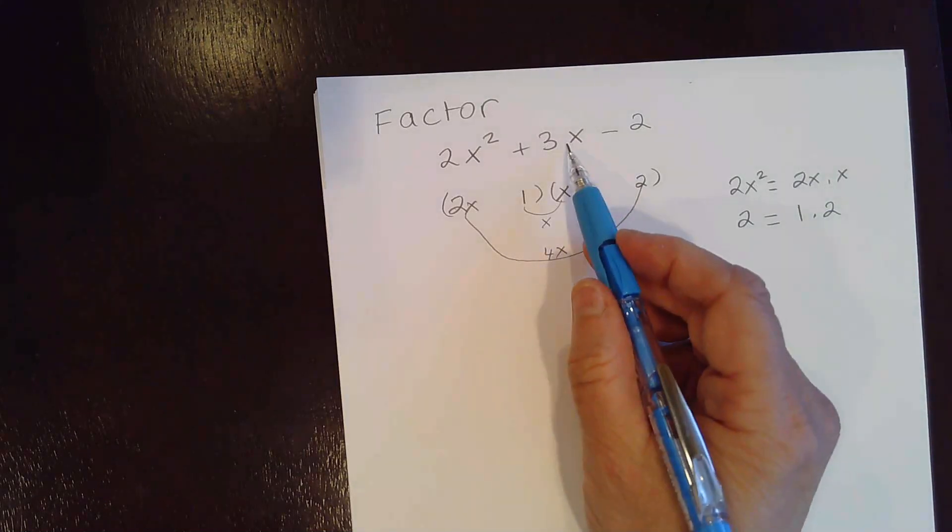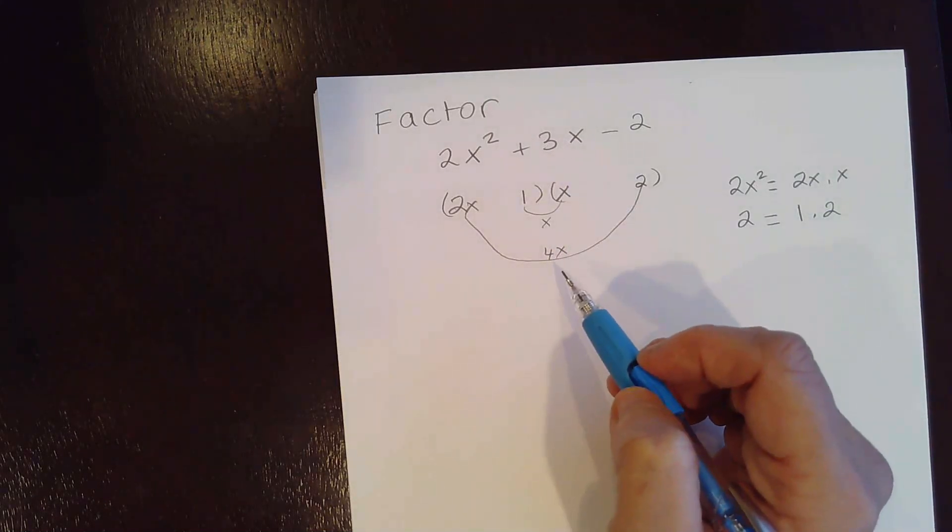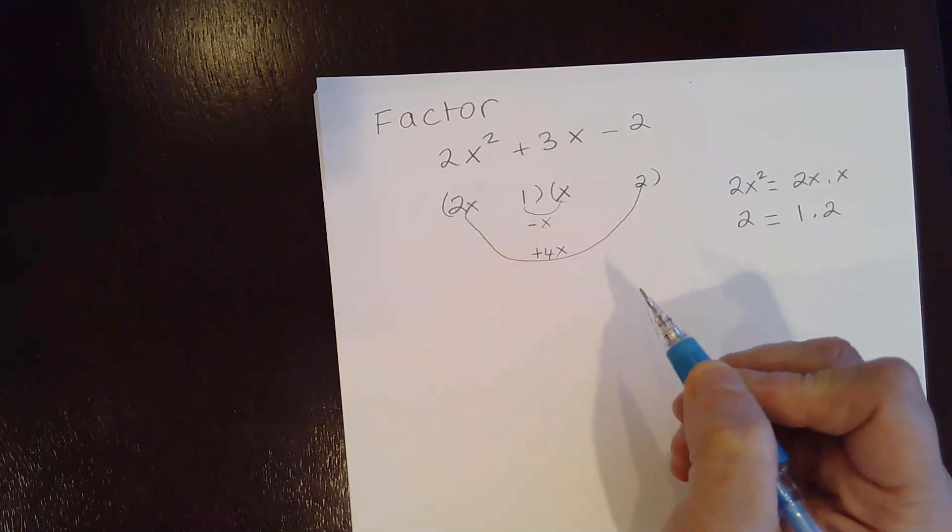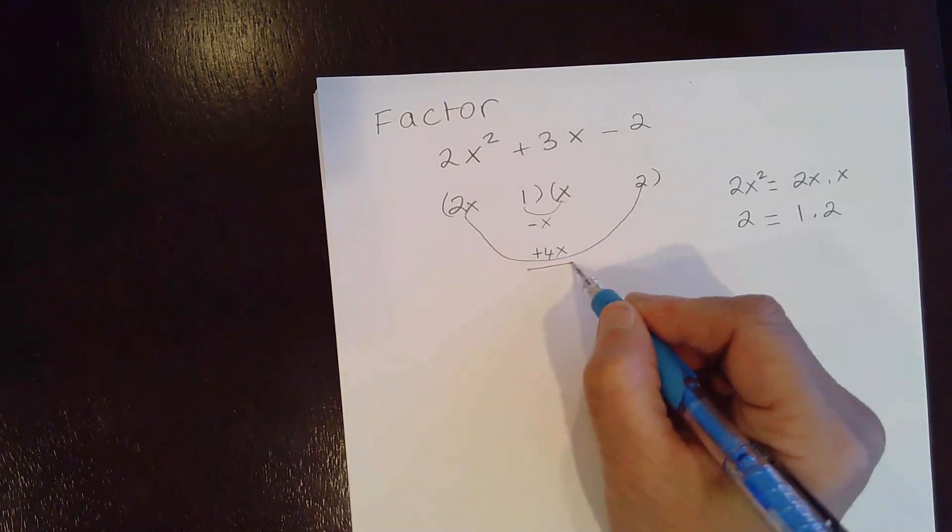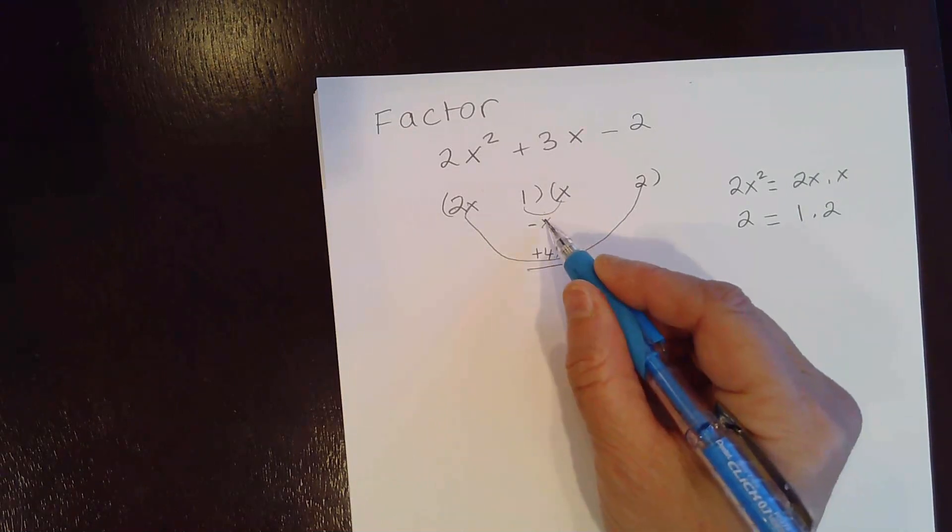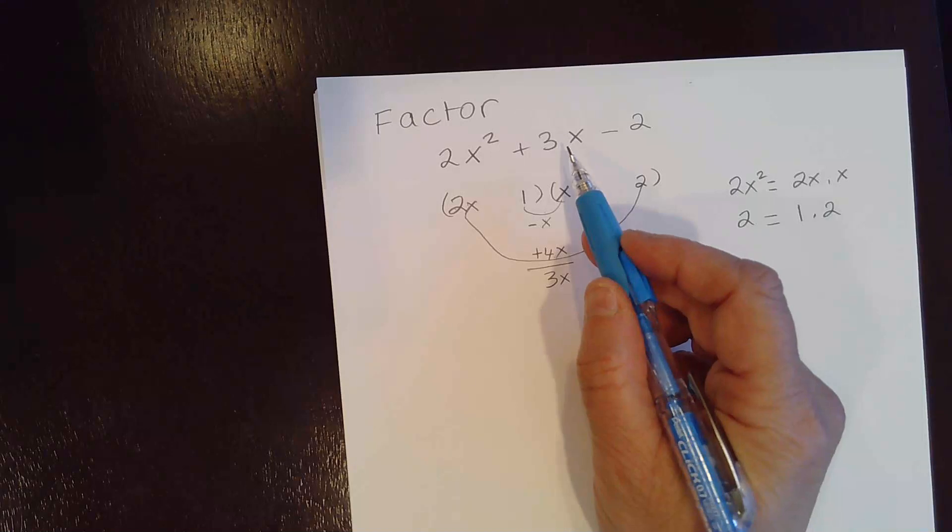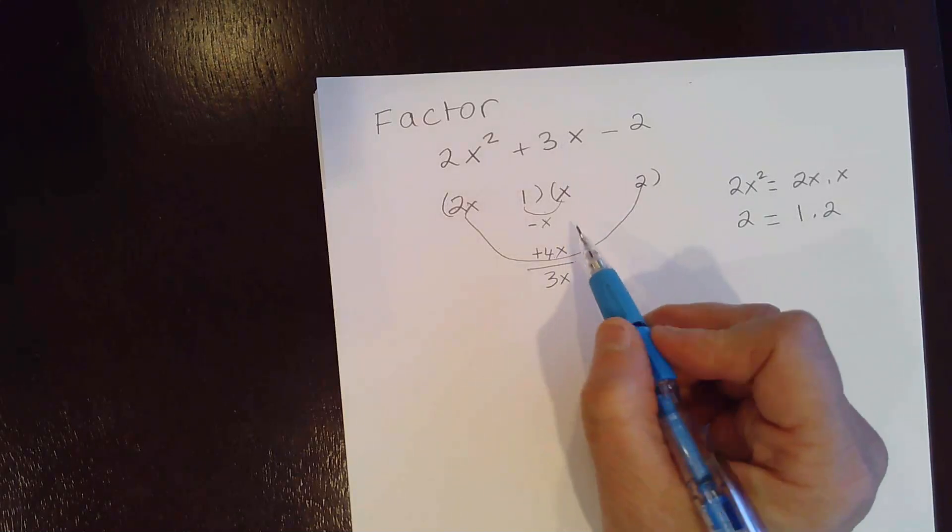You need this to be 3x. So you need to have a positive here and a negative here to get 3x. You see that? Because when you add them up, 4x minus x, you will get 3x, which will give you the middle term. So this is the way you check the middle term.